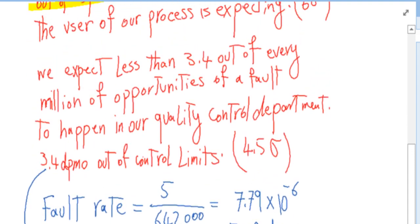The other thing we learned is that we expect less than 3.4 out of every million opportunities of a fault to happen when it is controlled by our quality control department.